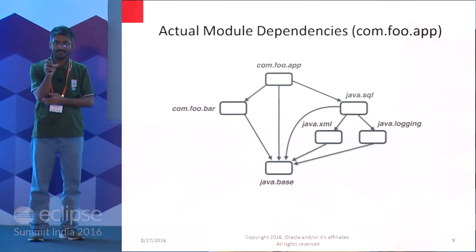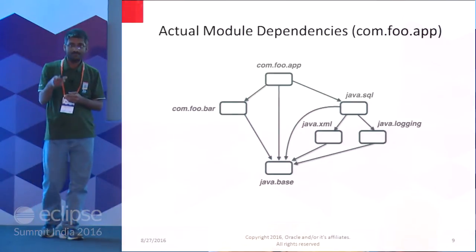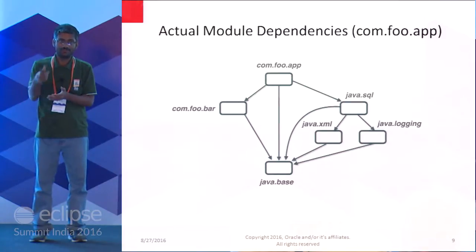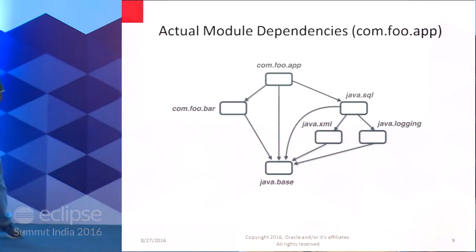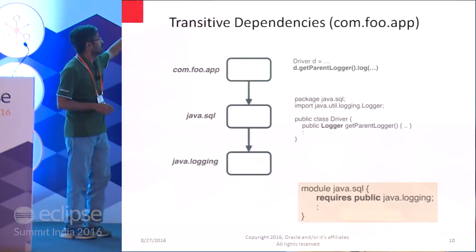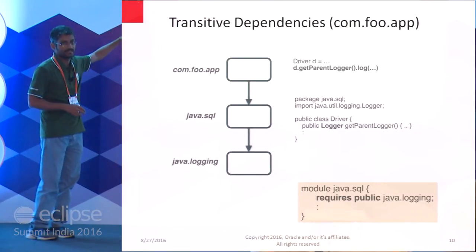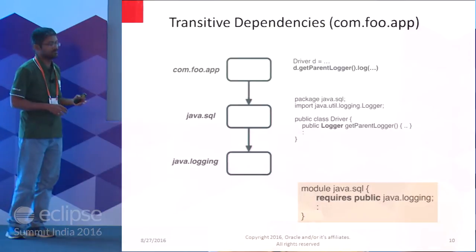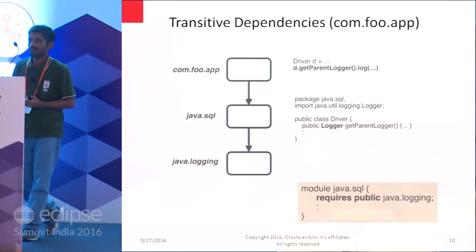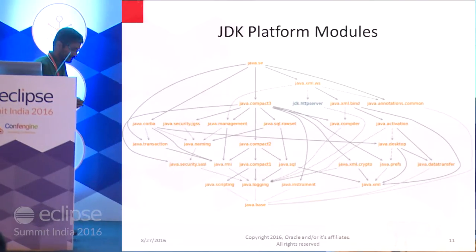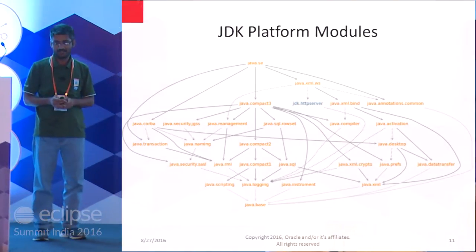The actual module dependency graph is larger than declared. All modules implicitly depend on java.base. Comfu-app depends on java.sql, but java.sql uses two more modules: java.xml and java.logging. This is transitive dependency — A depends on B, B depends on C — because java.sql internally uses logger API that comfu-app doesn't directly use. There has been immense effort in JDK 9 modularization; the platform itself now inherently supports modules.